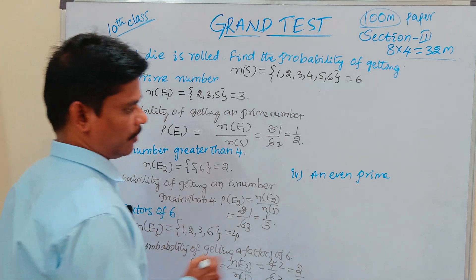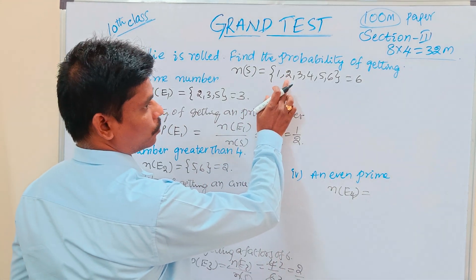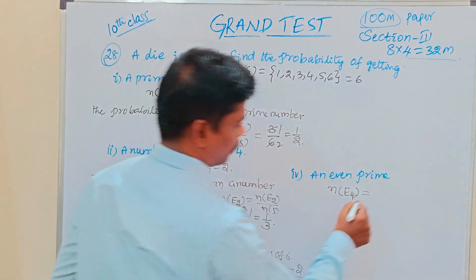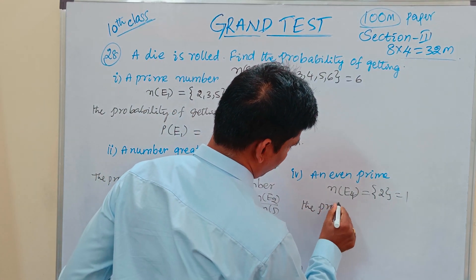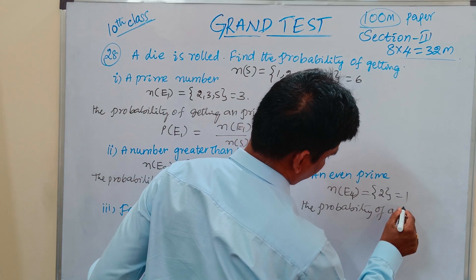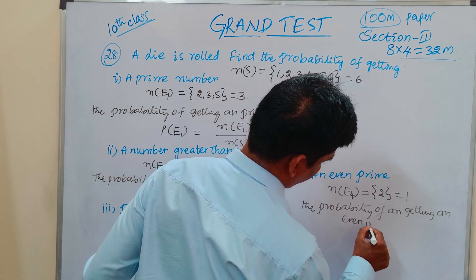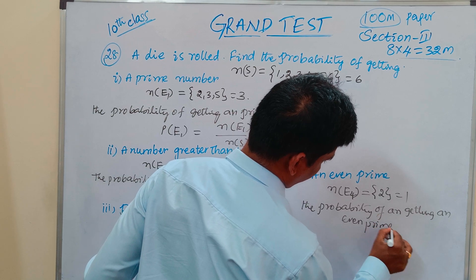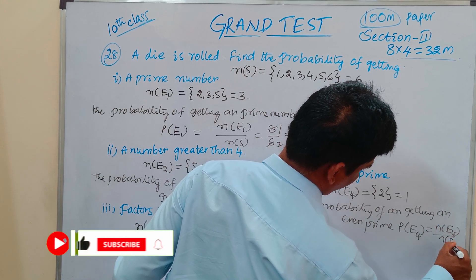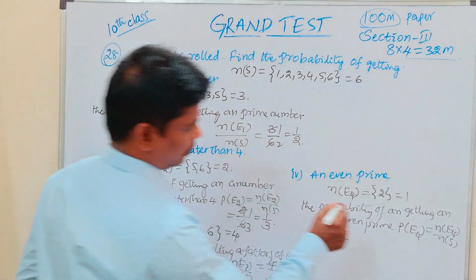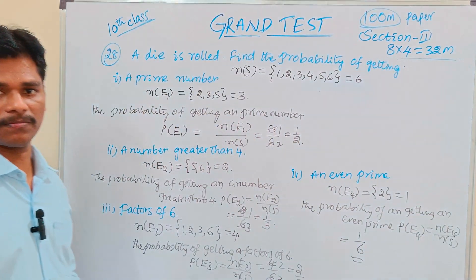Next, even prime. For N of E4, even prime numbers — the only even prime is 2. So N of E4 equals 1. Probability of getting an even prime: P of E4 equals N of E4 by N of S, that is 1 by 6. This question is the most important.